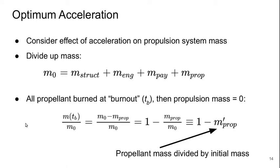At the burnout time TB, all the propellant has been burned. Then at that point the propulsion mass is zero. So the mass of the rocket at burnout over the initial mass is M0 minus Mprop over M0, or 1 minus Mprop over M0. We'll call this 1 minus M'prop. M' means the mass of whatever the subscript is divided by the initial mass.